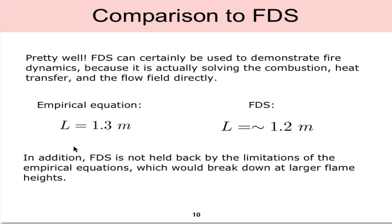How well does that compare to our empirical answer of 1.3 meters? It turns out that it's pretty good, pretty close. 1.3 meters, 1.2 meters. In this case, FDS can certainly be used to demonstrate fire dynamics because it's actually solving the combustion, heat transfer, and the flow field directly, whereas our empirical equation is using previous data sets to estimate what the flame height would be.